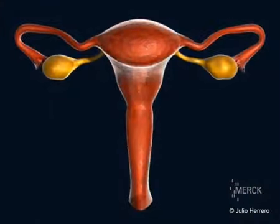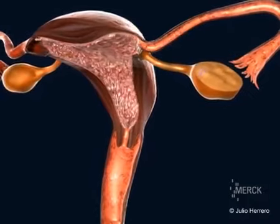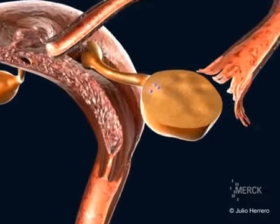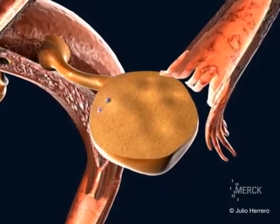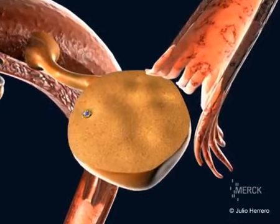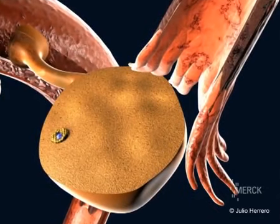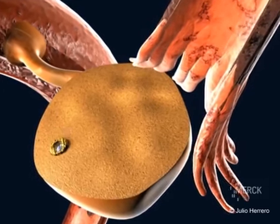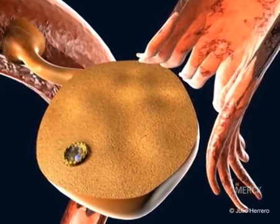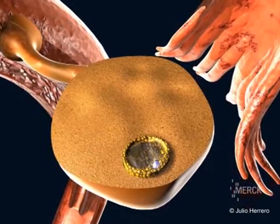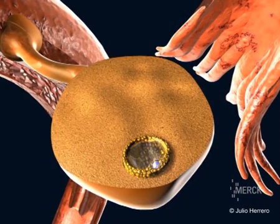At the start of the menstrual cycle, a cohort of follicles starts to grow, but generally only one continues to develop. This follicle is referred to as the dominant follicle. In its interior, the follicle contains an immature oocyte. This follicle increases in size by one to two millimeters per day.